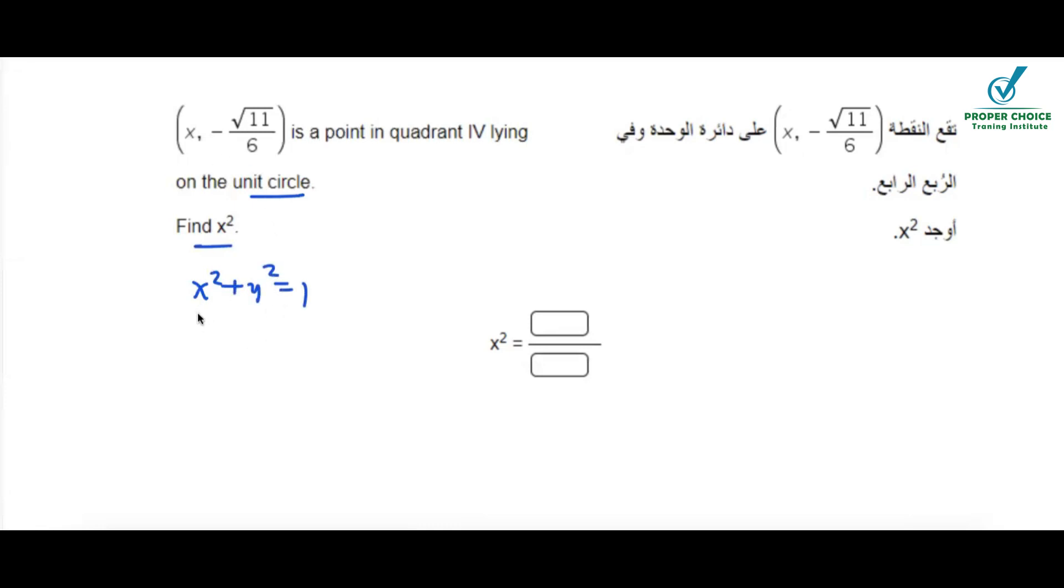We are asked to find the coordinate x², so this equation will be rearranged as x² equals 1 minus y².